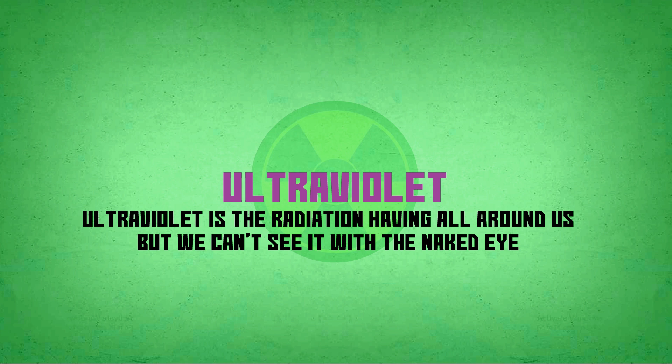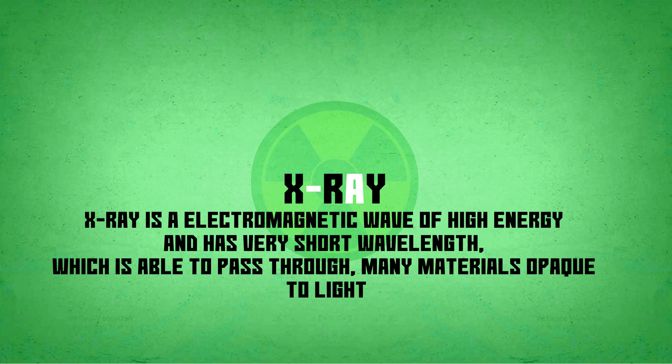Ultraviolet is a radiation having all around us, but the only problem is you can't see it with the naked eye. X-ray is an electromagnetic wave of high energy and has very short wavelength, which is able to pass through many materials opaque to light.